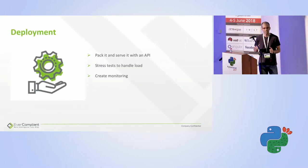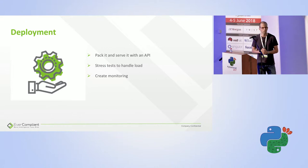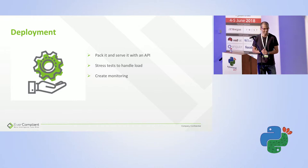Next step: deployment. You pack it with an API or deploy it as a package and serve it as a product. You have to do stress tests to see that you can handle loads and see how fast it works. You have to create monitoring to make sure it works over time. And importantly, you have to make sure it keeps its accuracy over time — some datasets tend to change. In our world of money laundering, criminals evolve over time and become more sophisticated, so our models have to be updated constantly.